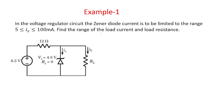In this problem we need to find the range of the load current and the range of the load resistance. That means we need to find IL_min to IL_max — the minimum and maximum values of the load current — and similarly RL_min and RL_max, the minimum and maximum values of the load resistance.